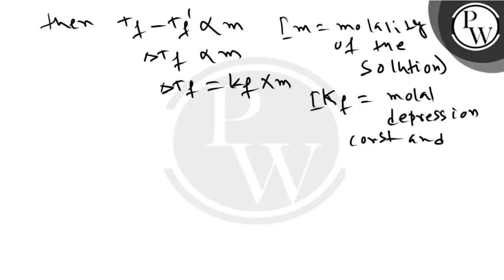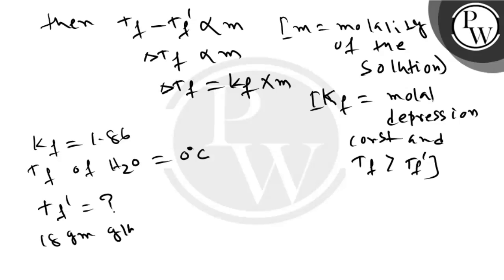And freezing point of pure solvent is always greater than that of freezing point of the solution. In this question, Kf is equal to 1.86, Tf of H2O is equal to 0 degree Celsius. Tf dash we have to calculate, given that 18 gram glucose is dissolved in 1000 gram of solvent, that is water.